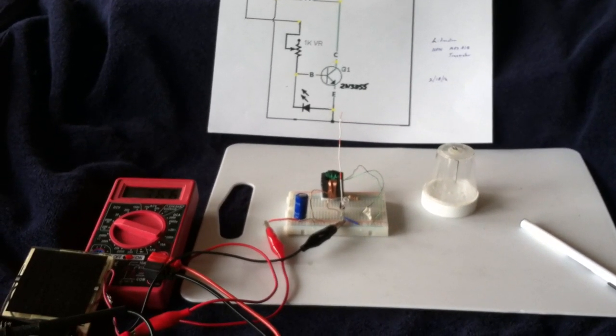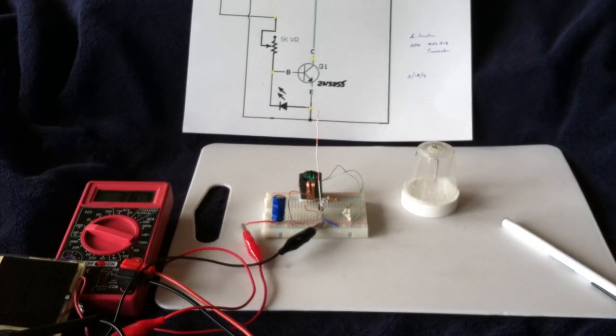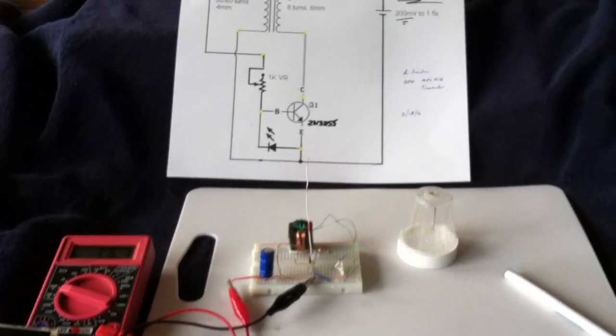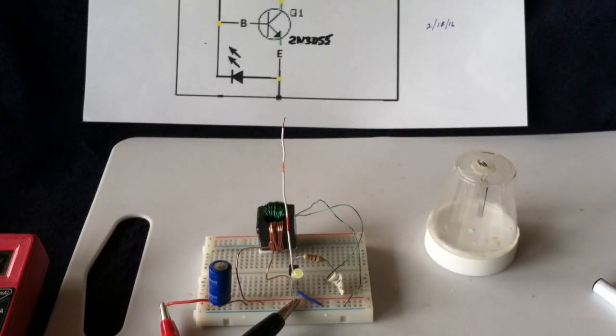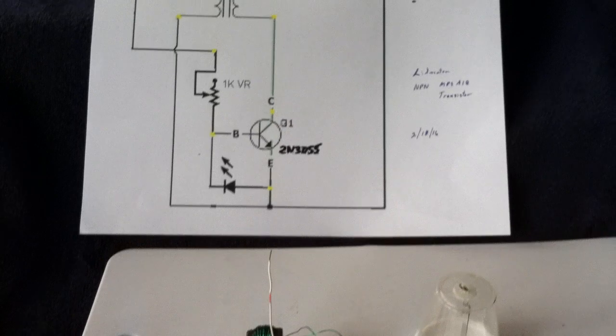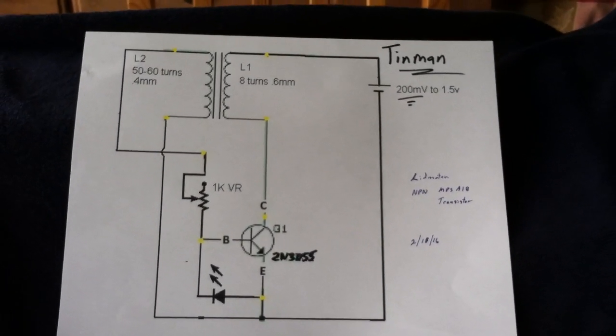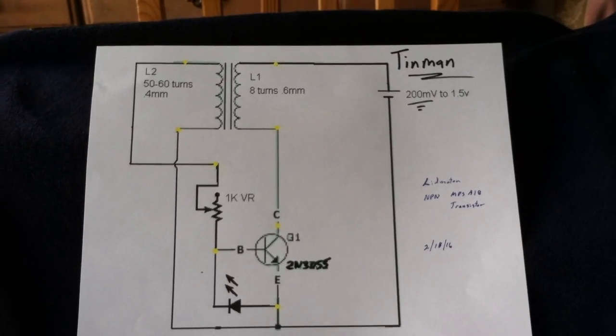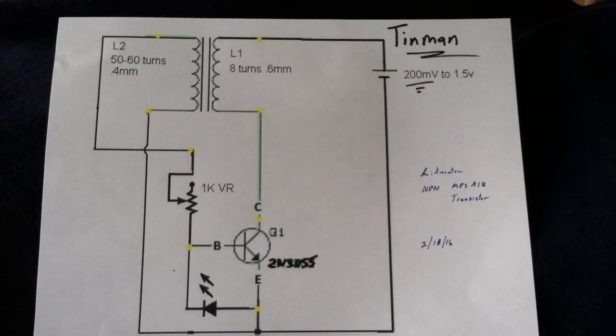Here's another experiment dealing with the blocking oscillator and jewel thief type of circuits where you take a very low voltage and light up an LED that requires a lot higher voltage using a transformer type effect with the flyback of the collapsing field of the inductor. This is Tin Man's circuit.